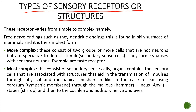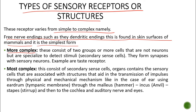The types of sensory receptors vary from simple to complex. The free endings, such as dendritic endings, are found in skin surfaces and are the simplest form. The more complex form consists of two or more cells that are not neurons but are specialized to detect stimuli — called sensory cells — and form synapses with sensory neurons. Examples are taste receptors. The most complex are those secondary cells with organs containing sensory cells associated with structures that aid in transmission of impulses.